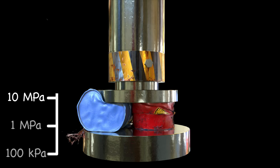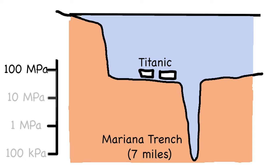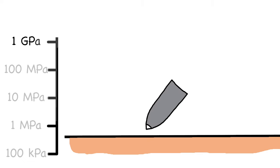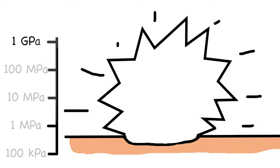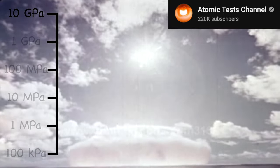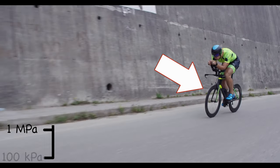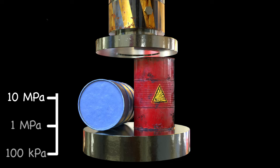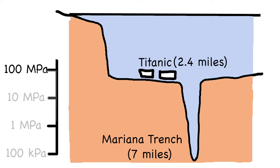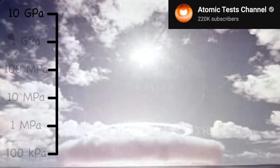10 megapascals is a hydraulic press. 100 megapascals is the bottom of the Mariana Trench. 1,000 megapascals, or 1 gigapascal, is the bursting pressure of an artillery shell. 10 gigapascals is the initial pressure of a 1 megaton nuclear warhead. 100 kilopascals normal air pressure. 1 megapascal, a bike tire. 10 megapascal hydraulic press. 100 megapascals Mariana Trench. 1 gigapascal artillery shell. And 10 gigapascal, a 1 megaton nuclear warhead.